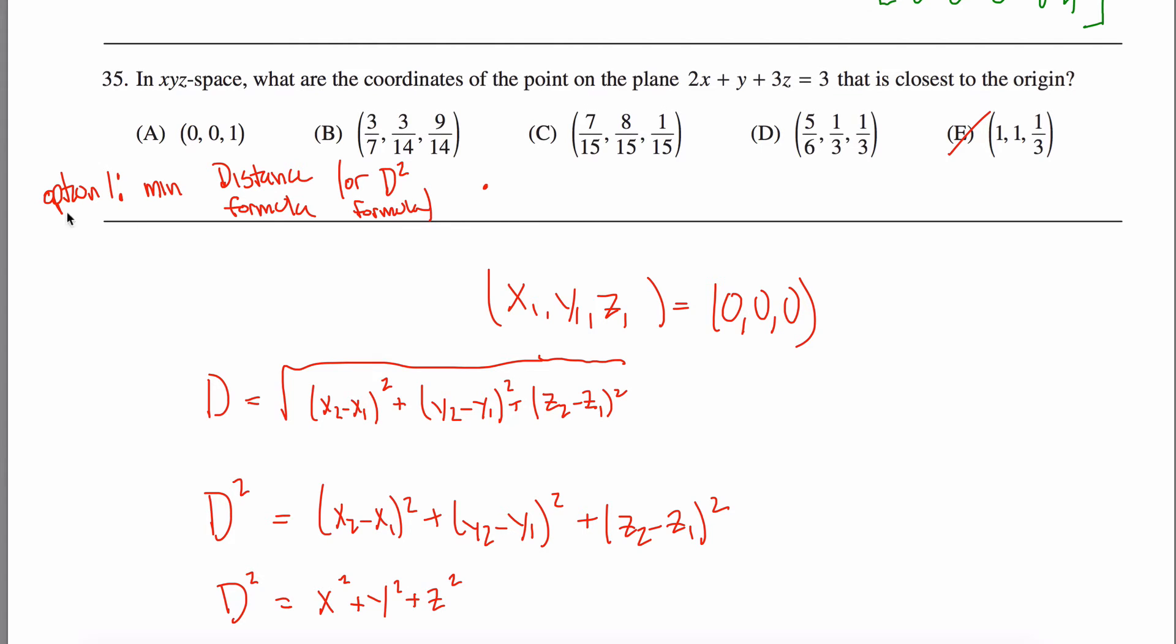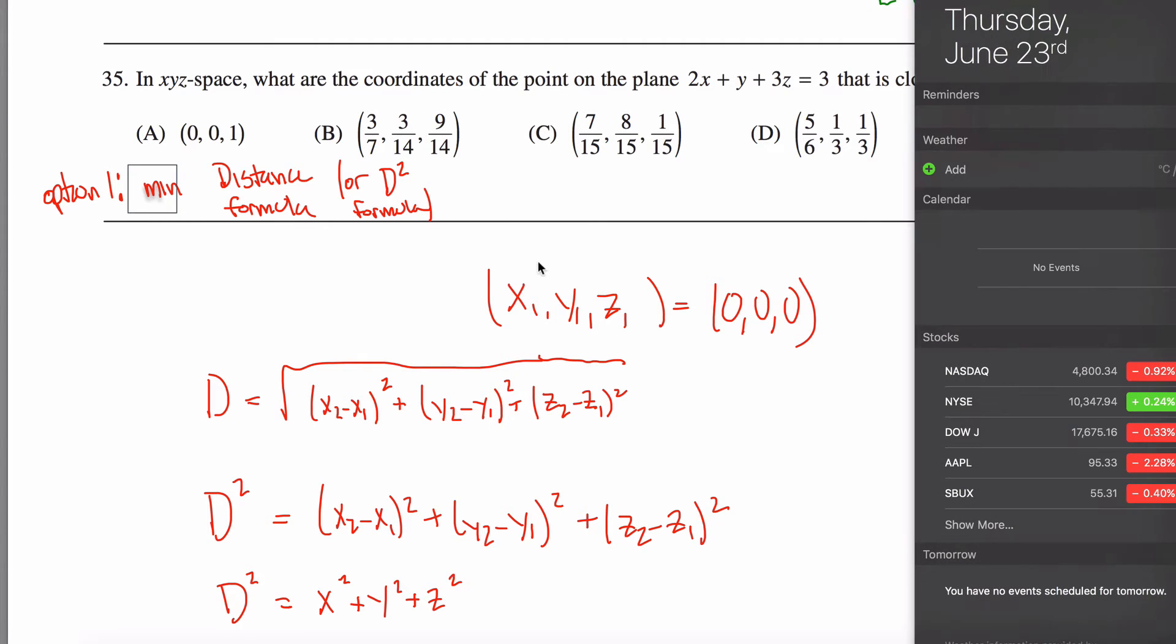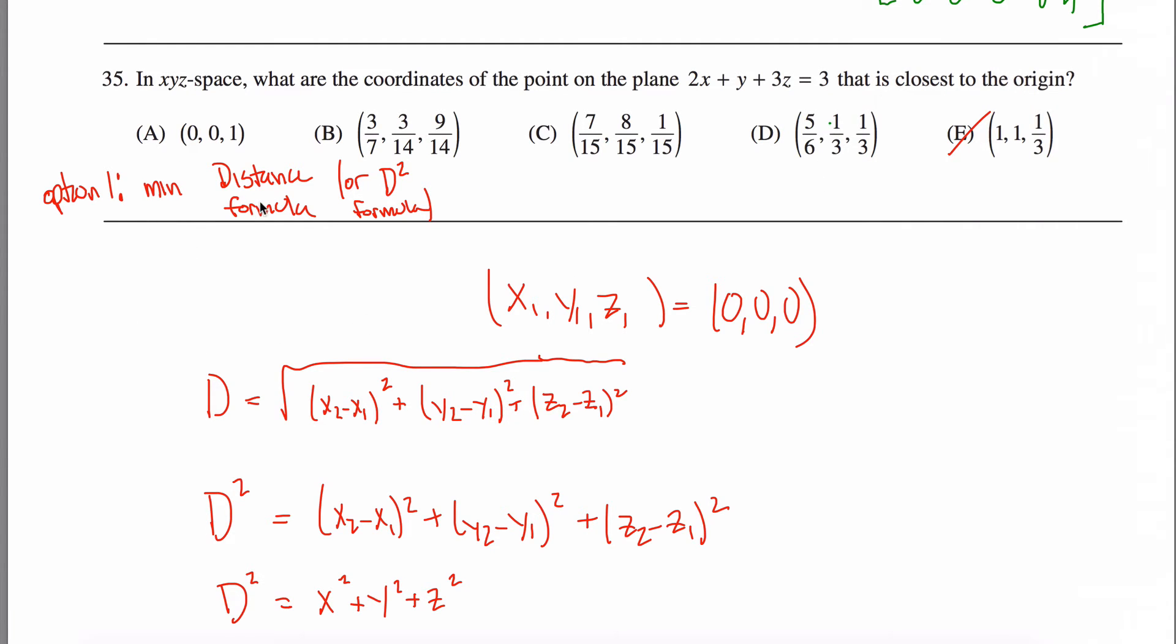I have this as a function. Option two. Maybe this is green. Well, I guess this is really still option one. Option one is to minimize the distance formula.